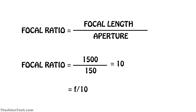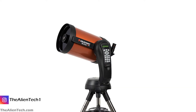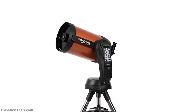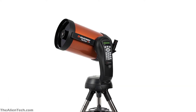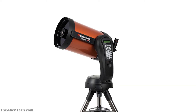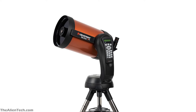This focal ratio parameter of a telescope completely depends on the first two most important parameters of the telescope. With the help of the focal ratio, you can determine the speed of the telescope.